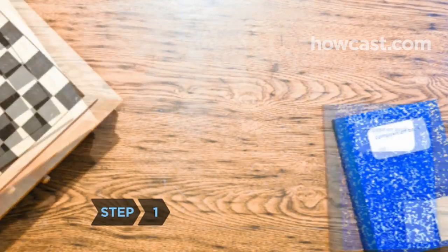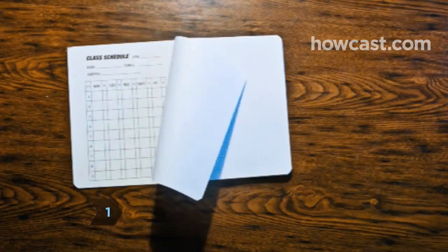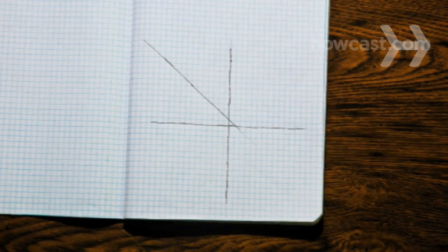Step 1. Use graph paper to graph the line whose slope you're measuring. Draw the line on standard X and Y axis.